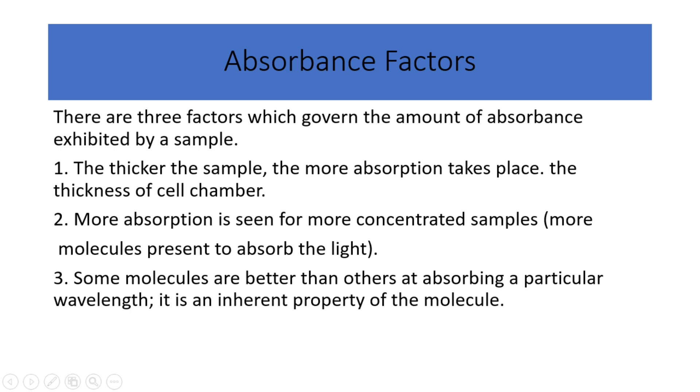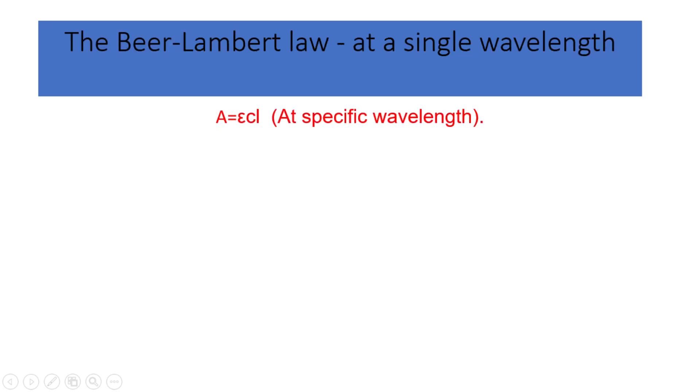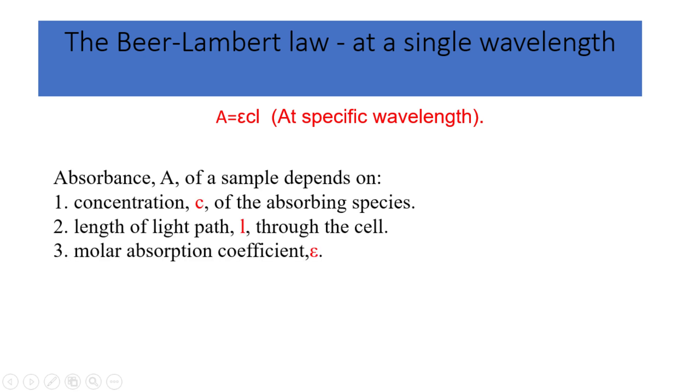Here, the Beer-Lambert law comes into the context, which considers the previous factors and provides a mathematical formula to calculate the absorbance of a molecule at a specific wavelength. A equals epsilon times C times L. A represents the absorbance of the sample. Epsilon denotes the molar absorptivity or the molar absorption coefficient. C represents the concentration of the sample. L denotes the path length of the sample.